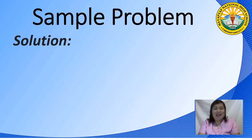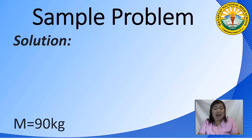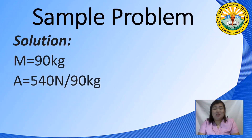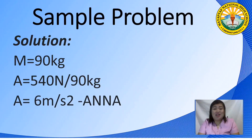To find Anna's acceleration, given her mass of 90 kg: acceleration equals 540 N divided by 90 kg, giving Anna an acceleration of 6 m/s². Notice that since Anna has the greater mass, Anna has the lower acceleration.